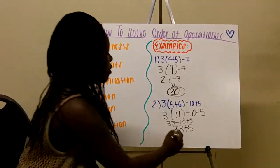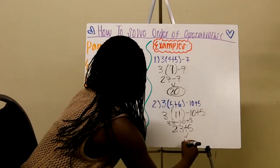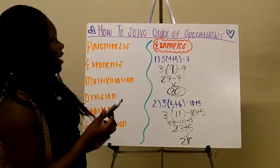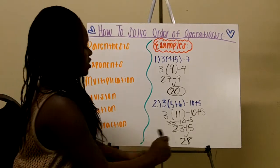Which would give you 20, 8, okay, 28. Thank you, and that was How to Solve Order of Operations. Thank you.